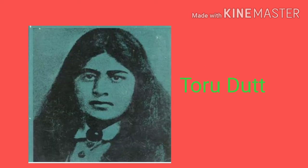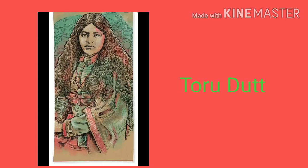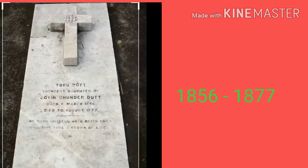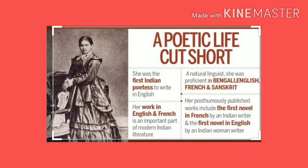Let's know about the poetess Toru Dutt. Toru Dutt was a Bengali poet from the Indian subcontinent who wrote in English and French. She was born in the year 1856 and died very young at the age of 21 in the year 1877. Her poems mainly focus on her Indian consciousness and her love towards Indian culture.